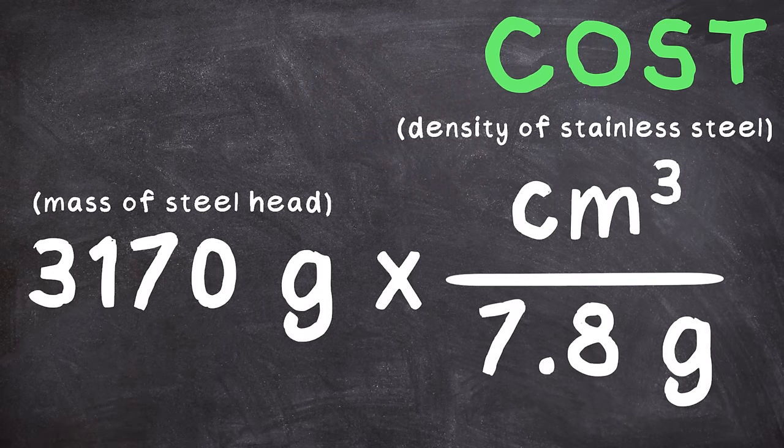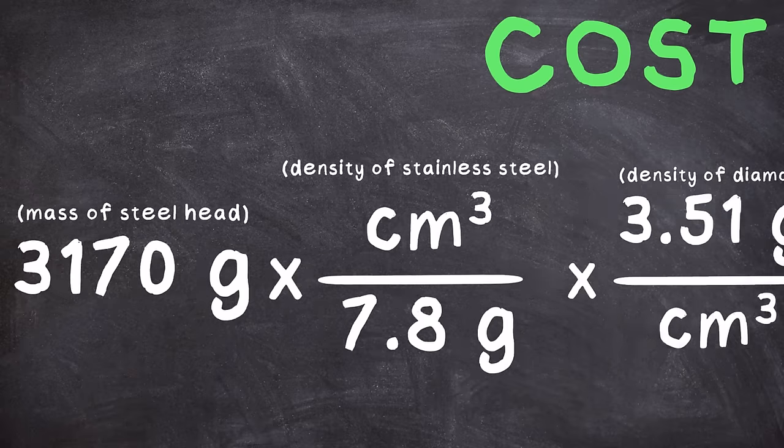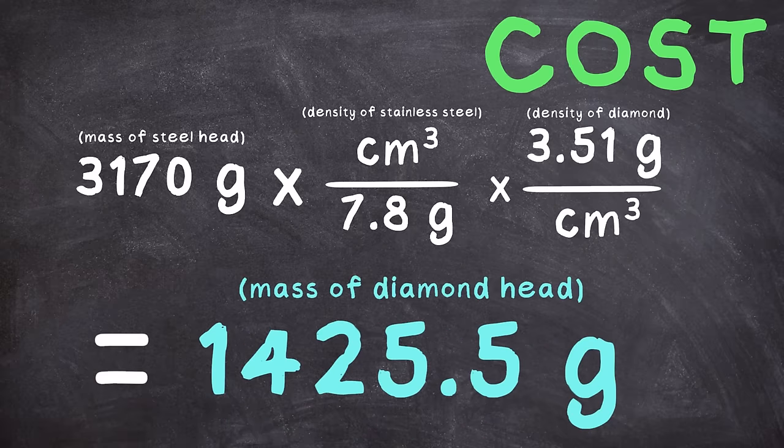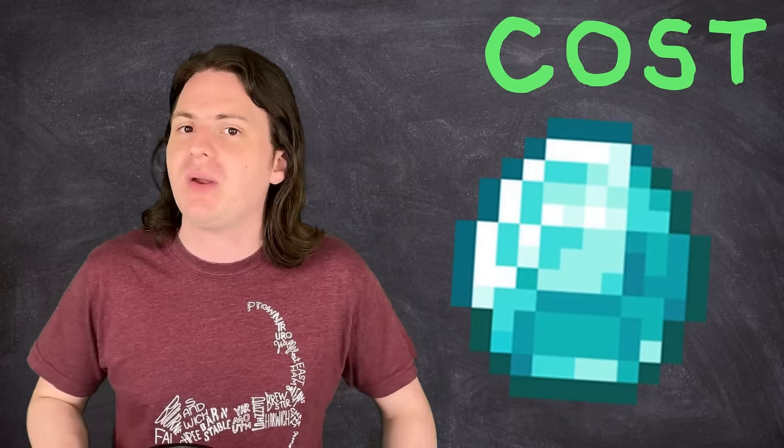We can then multiply that by the density for diamond, 3.51 grams per centimeters cubed, to find that a pickaxe made entirely of diamond would weigh 1,425.5 grams.